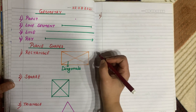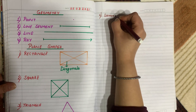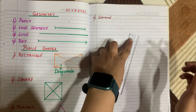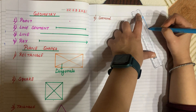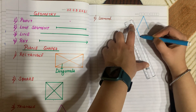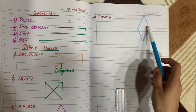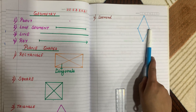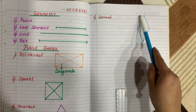Now the next shape — the fourth shape — is the diamond. A diamond has four sides and four vertices. We can say that a diamond is like a tilted square because all its lines are slanting lines.